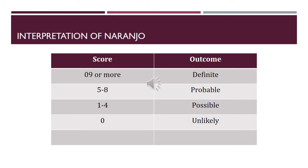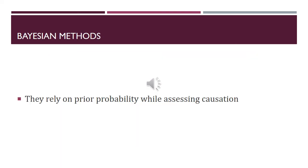Score interpretation: a total score of more than 9 means there is a definite relationship between the adverse event and the drug; a score of 5 to 8 means probable relationship; a score of 1 to 4 means possible relationship; and a score of 0 means the adverse event is unlikely to be associated with the drug.